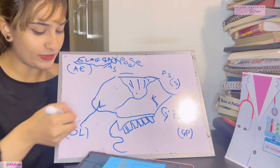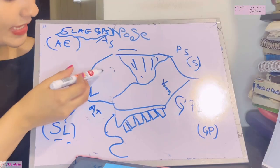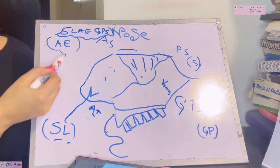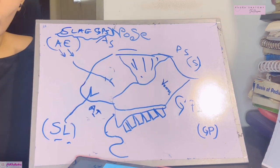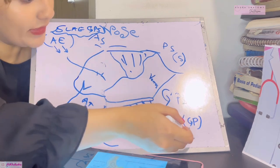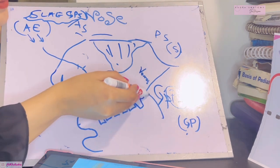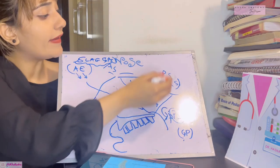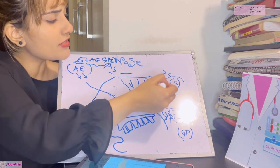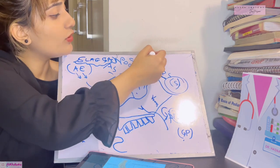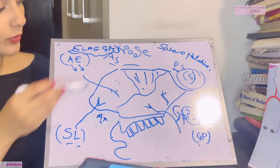AE stands for the anterior ethmoidal artery's septal branch, supplying the anterosuperior quadrant. GP stands for the greater palatine artery, which gives a branch to the posteroinferior quadrant. Finally, S stands for the sphenopalatine artery, supplying the posterosuperior quadrant. The sphenopalatine artery is the main artery of the nasal septum.